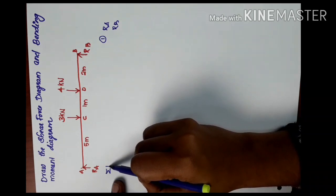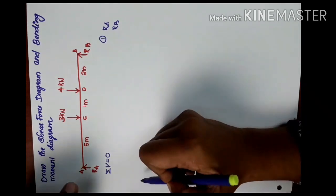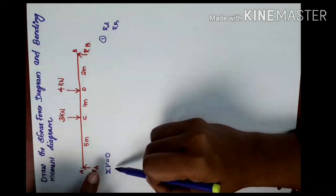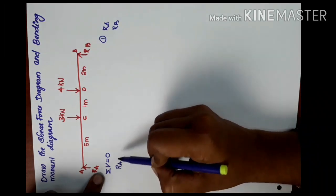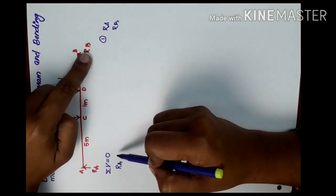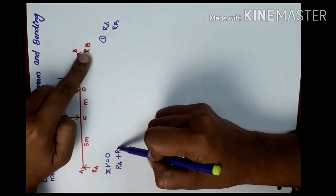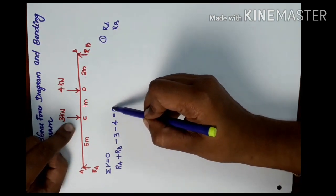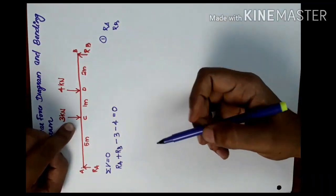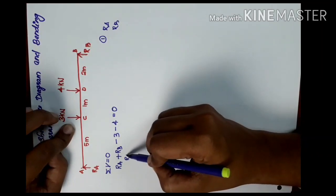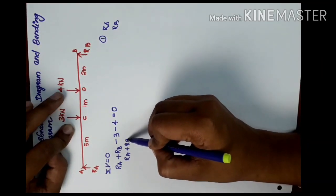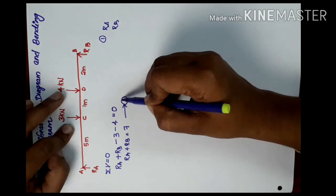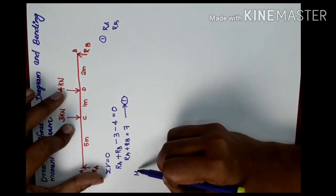The first step is Sigma V equals zero — the sum of vertical forces equals zero. In the upward direction we have RA and RB. In the downward direction we have minus 3 and minus 4, which equals zero. So we get RA plus RB equals 7. This is equation number 1.